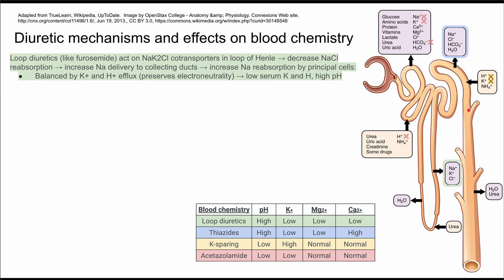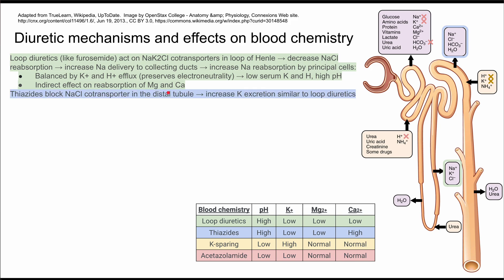That increased sodium delivery causes greater sodium reabsorption by the principal cells later in the nephron. To preserve electroneutrality, this is balanced by potassium and hydrogen ion efflux. This results in a low serum potassium and low serum hydrogen ion, leading to a high pH. There are also indirect effects on the reabsorption of magnesium and calcium, with decreased absorption of those ions similarly serving to preserve electroneutrality.